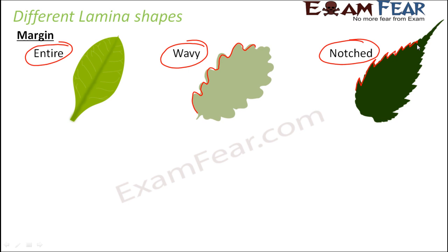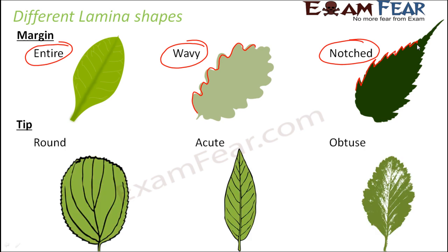Not only the margins, but the tip of the leaf or the tip of the lamina can also be different. The tip can be round, as you can see here — a round tip. The tip can also be acute, where you have a very pointed tip, as seen here.